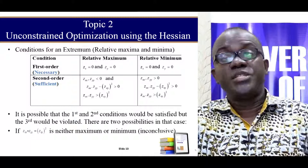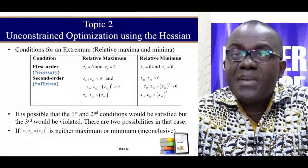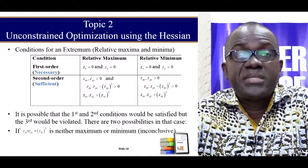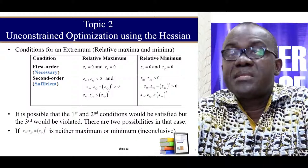Recall that you discussed unconstrained optimization using the Hessian. At level 200, you talked about maximizing profit, maximizing production, minimizing cost — these are all unconstrained optimization. And if you recall, there are three conditions for you to investigate the maximum or the minimum of a point. The first order condition is that the first order differential should be equal to zero.